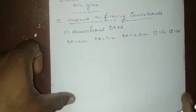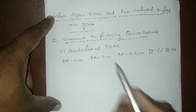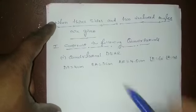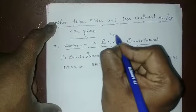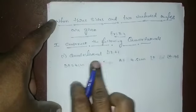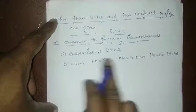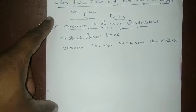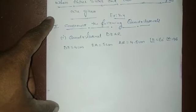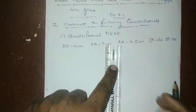Let's see how to construct a quadrilateral according to the measurement. This is exercise number 7.4. I have written this question. Before going to construct the actual diagram, we have to construct a rough diagram.